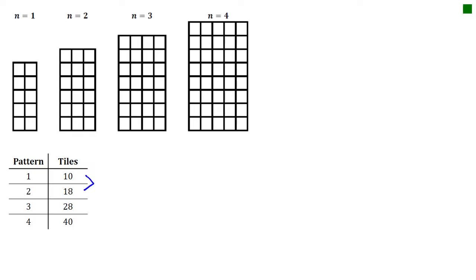From 10 to 18 is 8. From 18 to 28 is 10. And from 28 to 40 is 12. Now because they are not constant, that means it's not linear, so we go one more time. So 8 to 10 is 2, and 10 to 12 is 2. The fact that our second difference is constant means that we have a quadratic function.